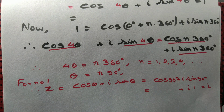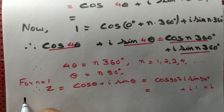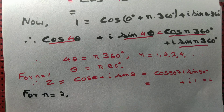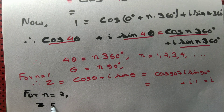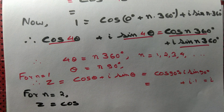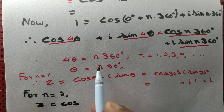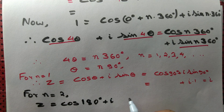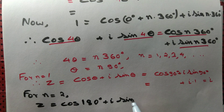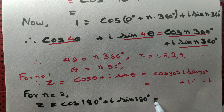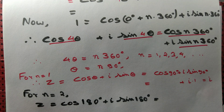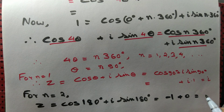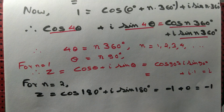For n equal to 2: z equals cos(2 × 90°) + i sin(2 × 90°), which is cos180° + i sin180°. cos180° is −1 and sin180° is 0, so z equals −1. That is another fourth root of unity.